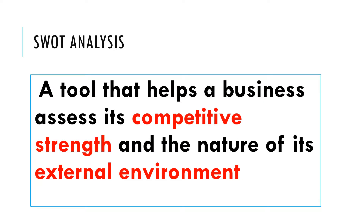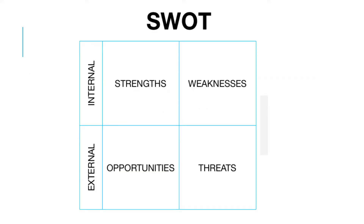We look at the strengths and weaknesses of the business and opportunities and threats occurring in the external environment. So SWOT stands for strengths, weaknesses, opportunities and threats. Strengths and weaknesses are where we focus on the business itself — internally — and opportunities and threats where we focus on the external environment.